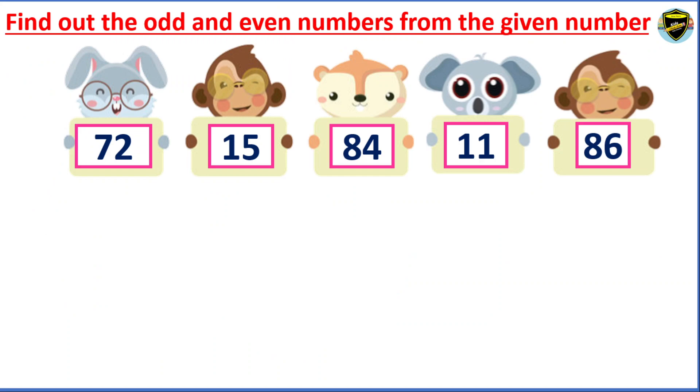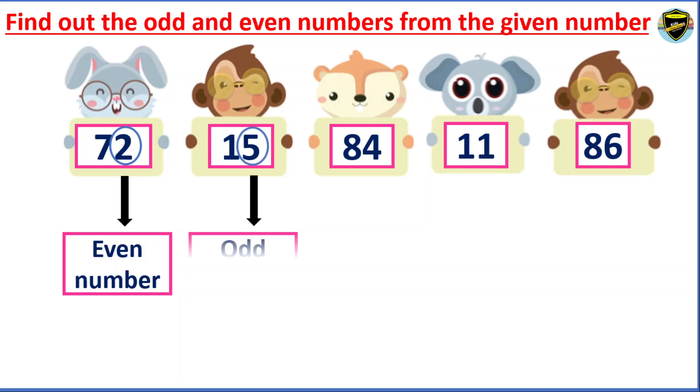Now, let us find out the odd and even numbers from the given numbers. Here, 2 is at the ones place and it is an even number. Here, 5 is at the ones place and it is an odd number.